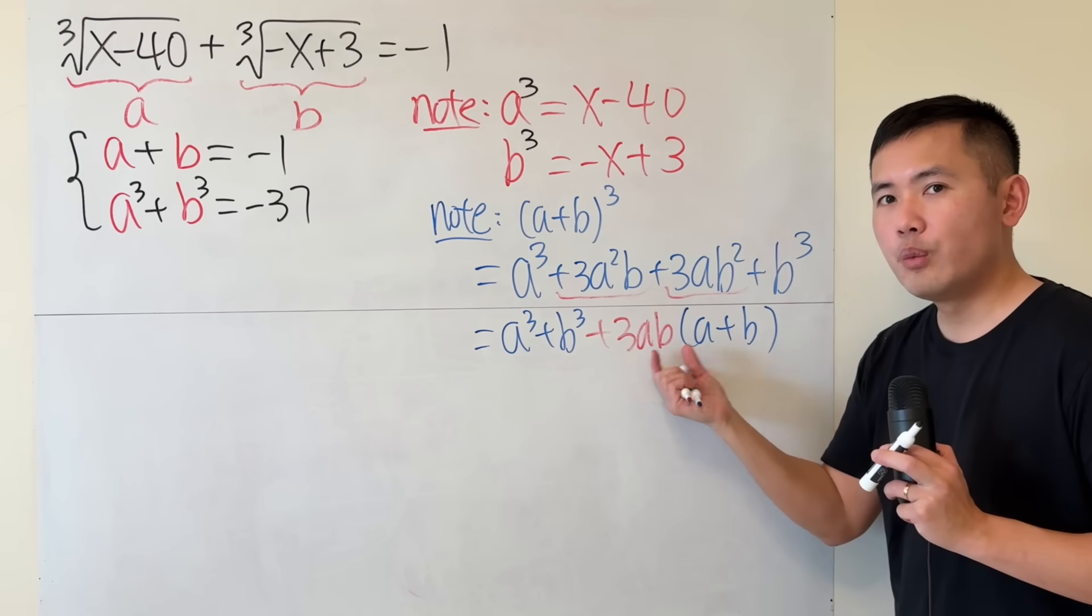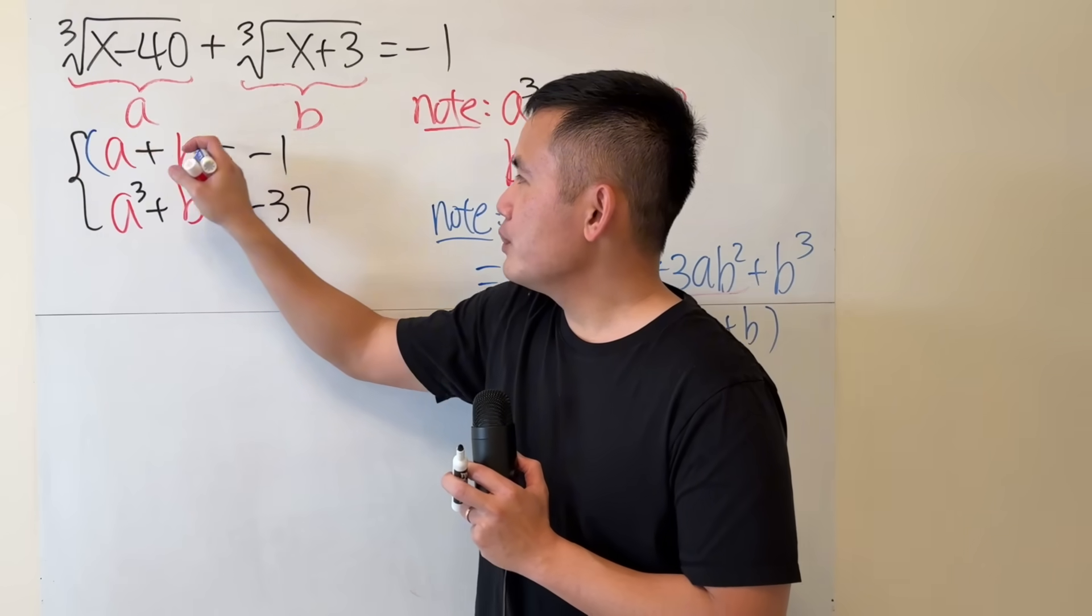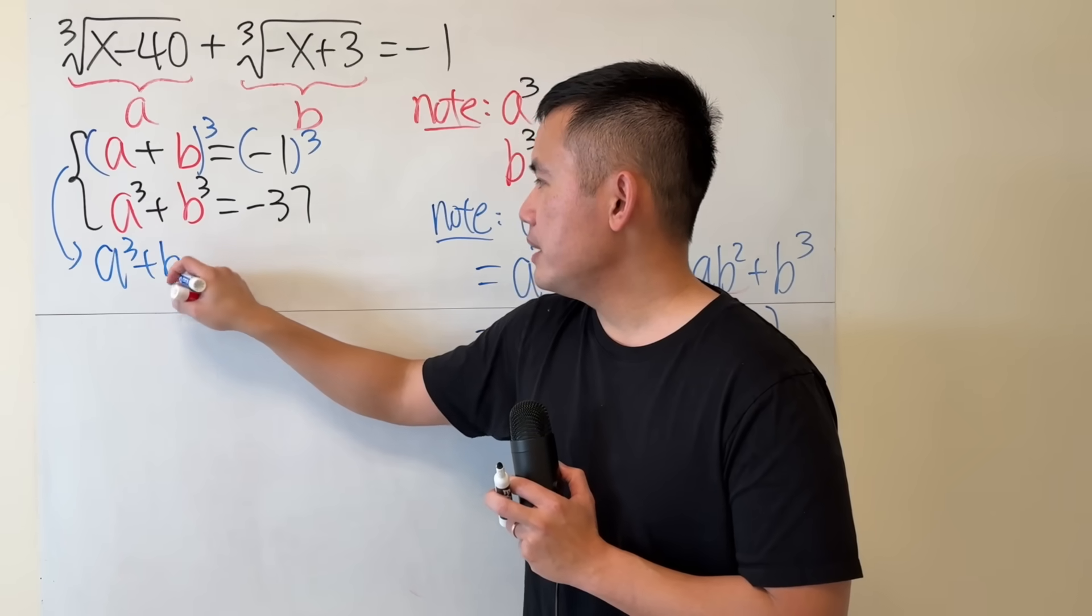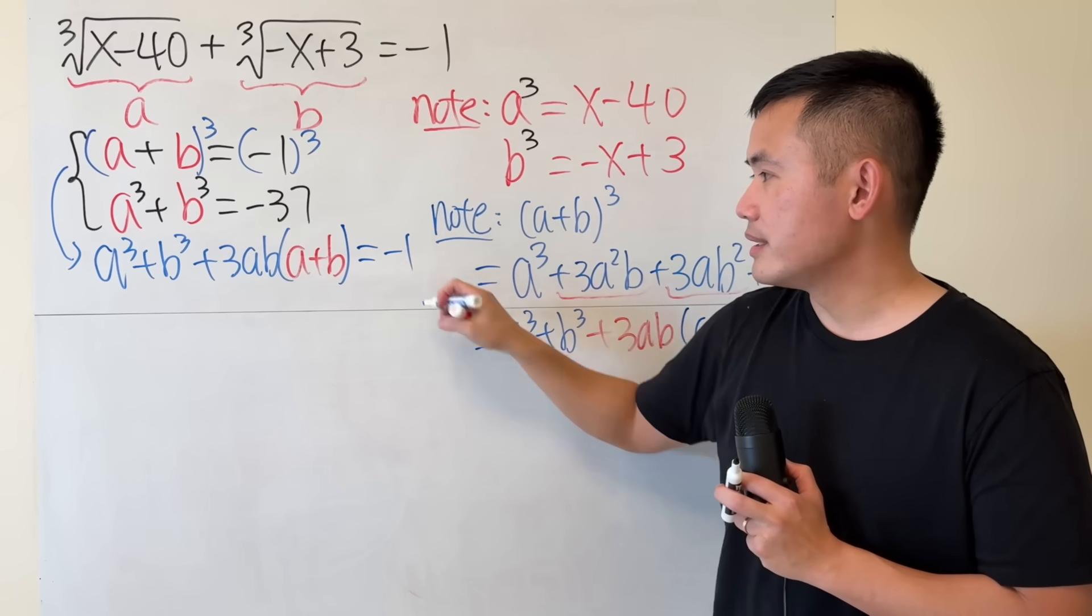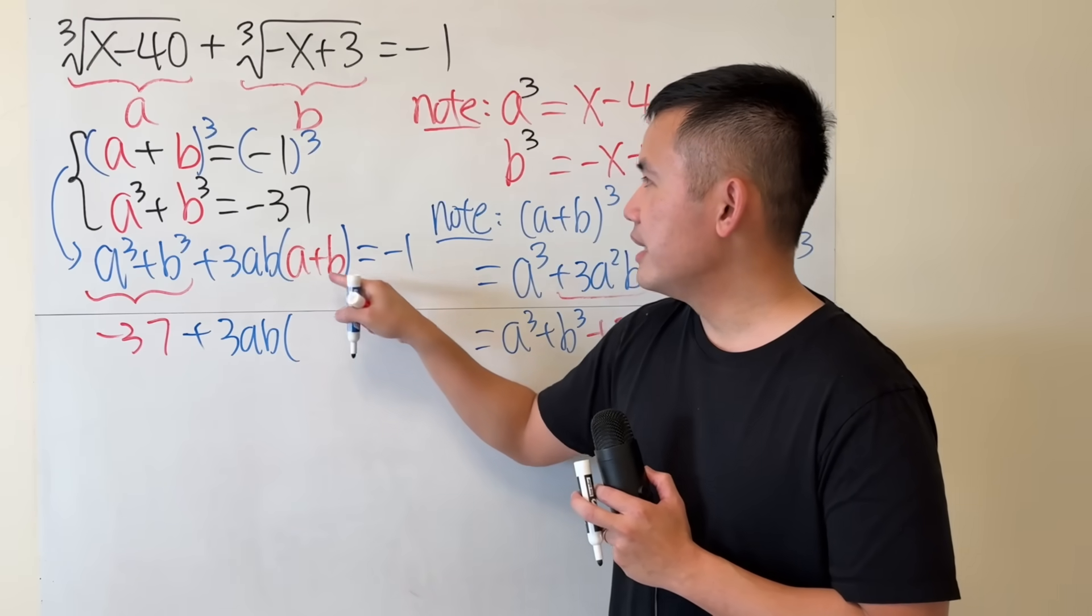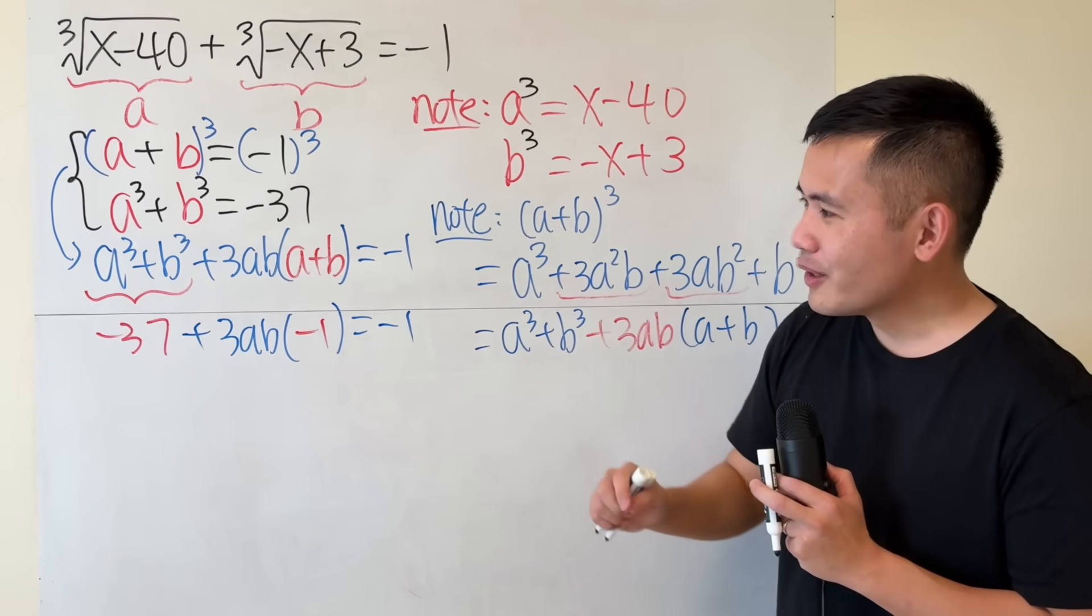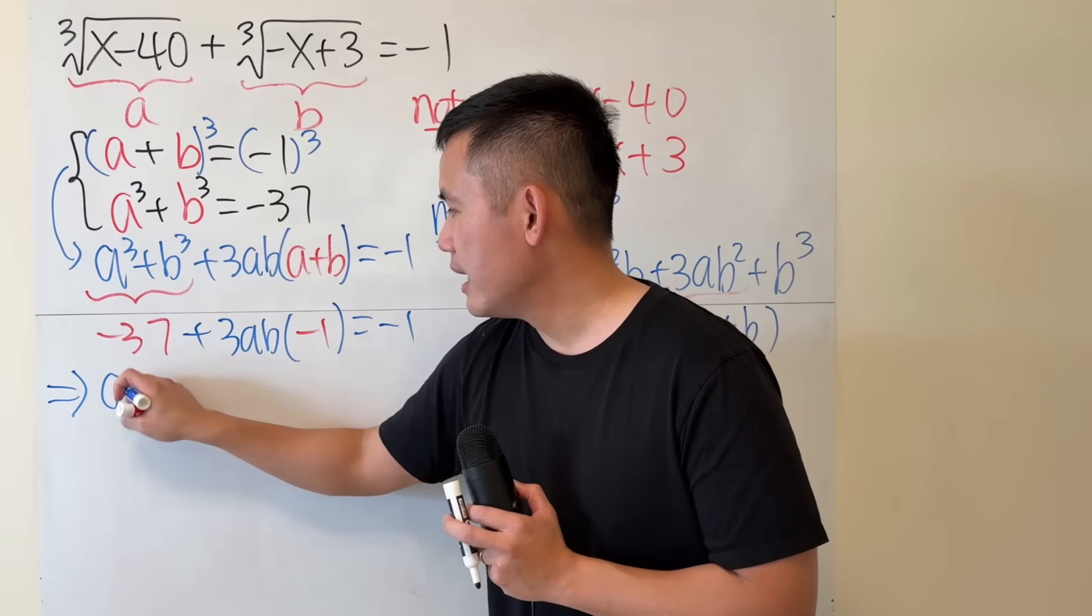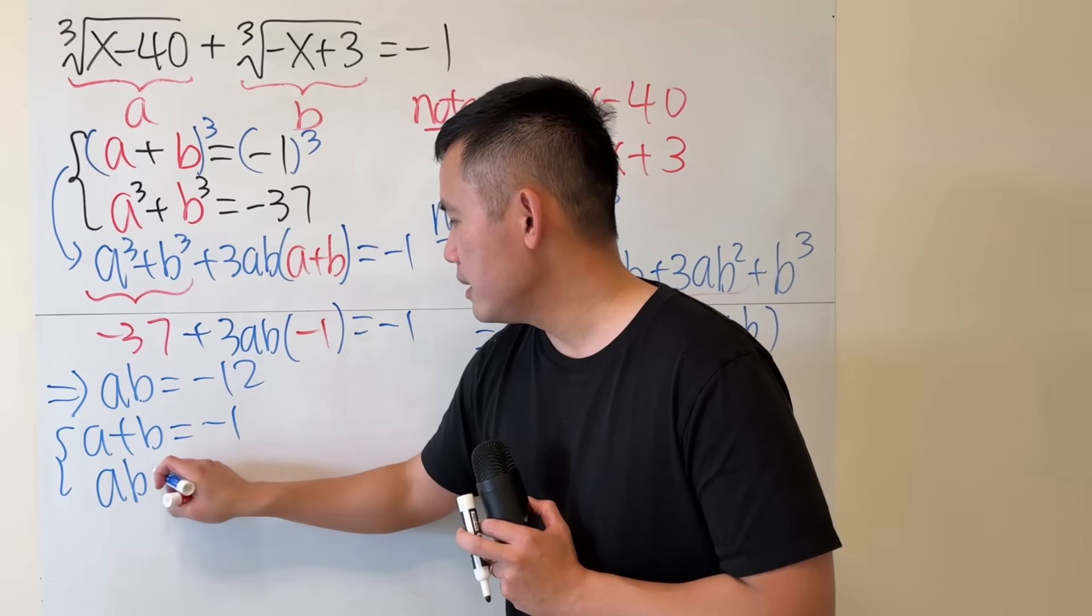And once we have ab and a plus b, we can reduce this to a quadratic equation, which is really nice. So if you look at this and then raise both sides to the third power, we will then get exactly what we have right here. a cube plus b cube plus 3ab times a plus b. And that's going to be negative 1 to the third power, which is negative 1. And just go ahead and solve it. This right here is negative 37 plus 3ab. And this is negative 1, the original negative 1. And this negative 1 is after the cube. Now, solving for ab, we can add 37 to both sides. So we get 36, and then divide it by negative 3. This tells us that ab equals negative 12.